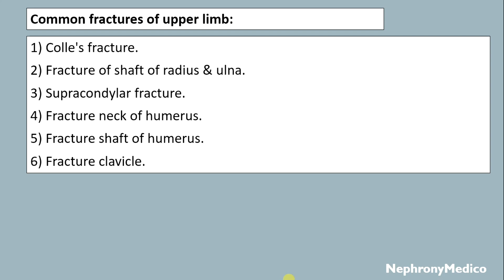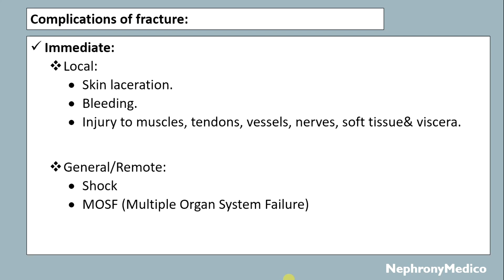Common fractures of the upper limb: Colles' fracture, fracture of the shaft of radius and ulna, supracondylar fracture, fracture of the neck of the humerus, fracture of the shaft of the humerus, and fracture of the clavicle.